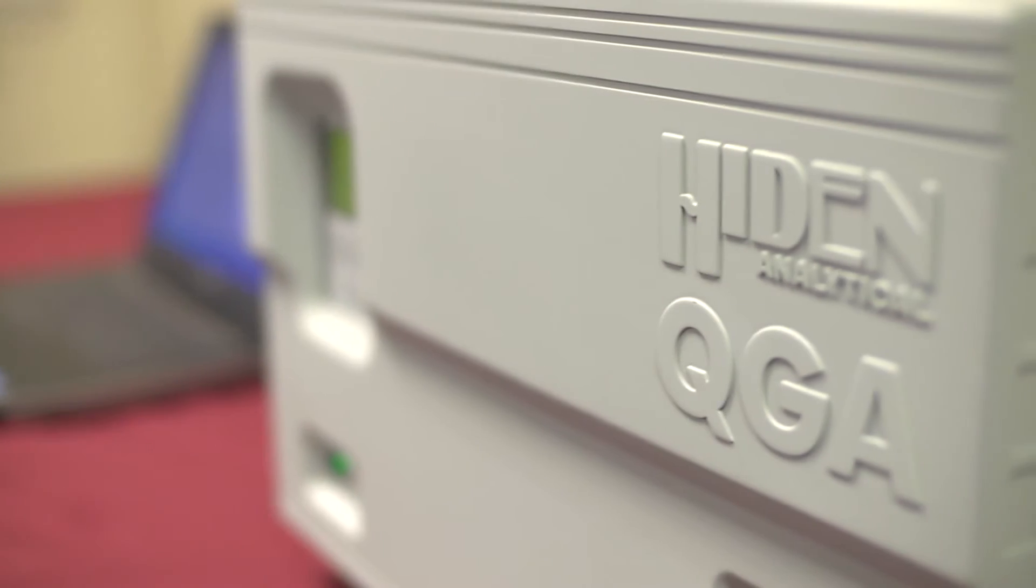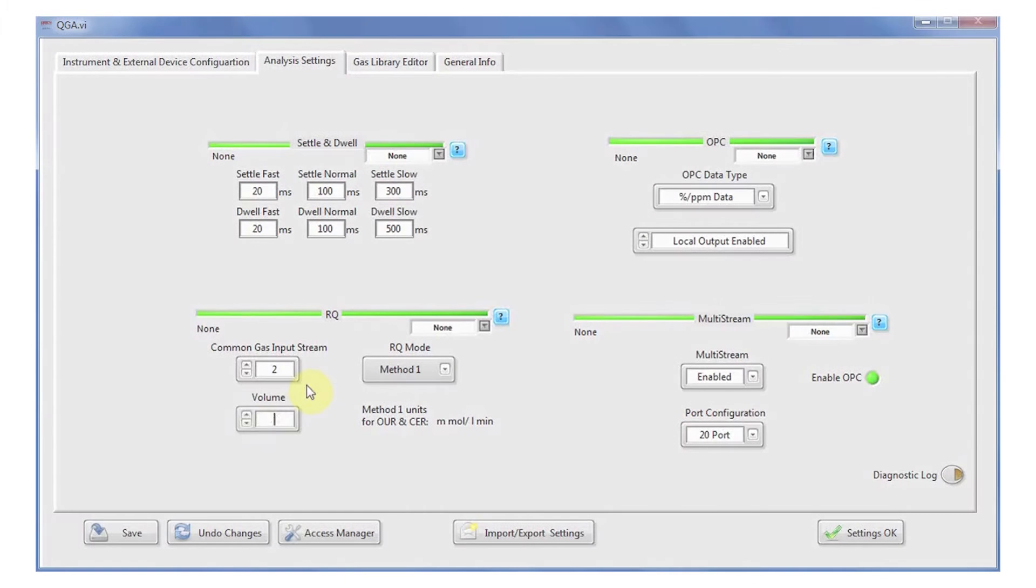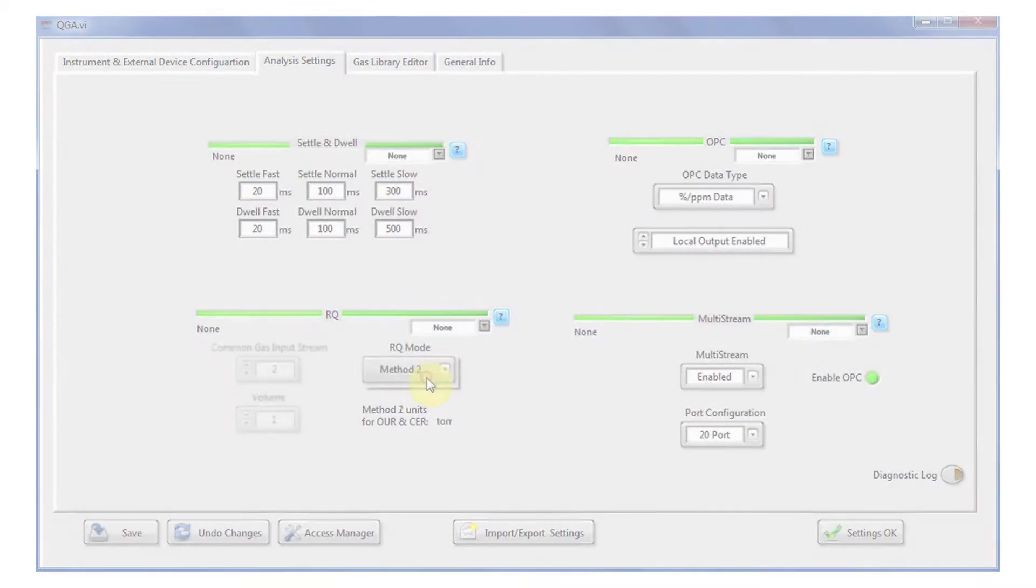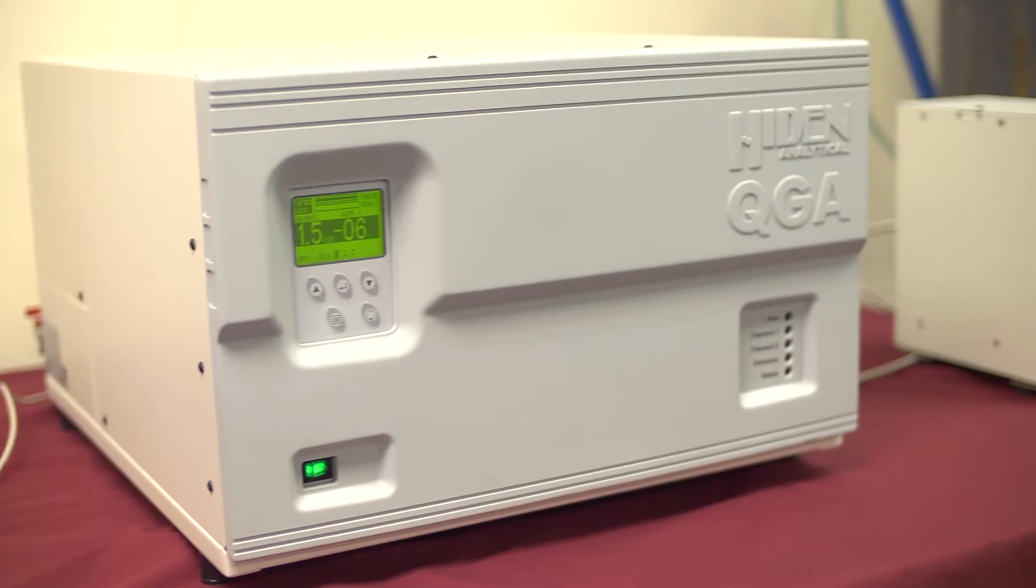The QGA system includes a whole suite of advanced features including range selection, dwell and settle time control, as well as control of the ion source for soft ionization that enables you to simplify spectra and spectral interpretation.